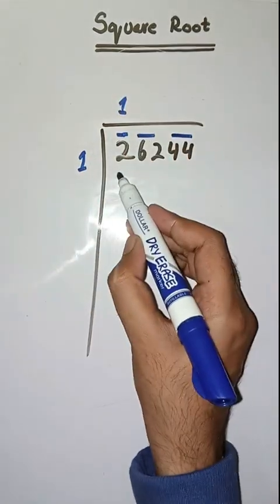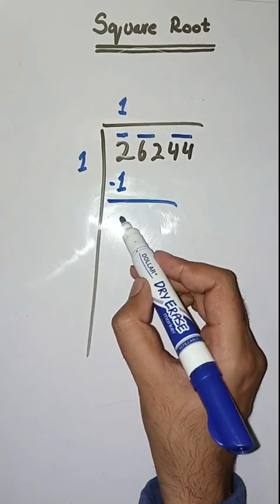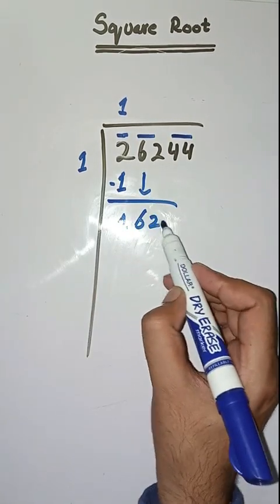1 times 1 is 1. We subtract, we get 1. Next pair we have 62, we'll write it below. Here we do 1 plus 1 which is equal to 2.